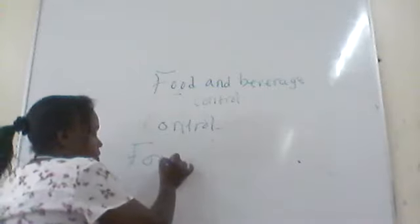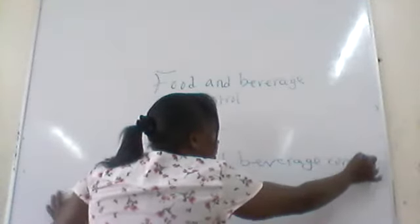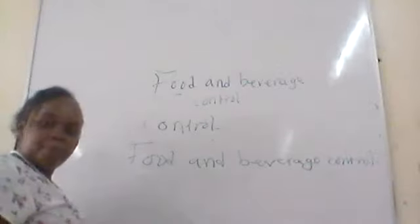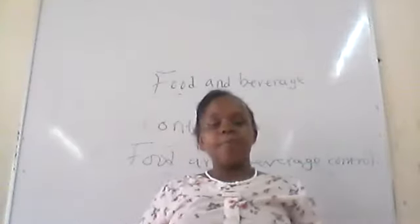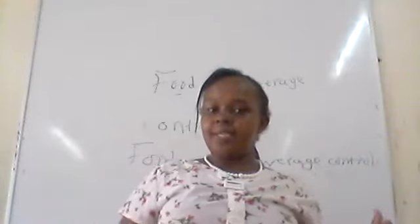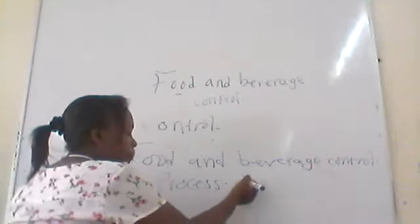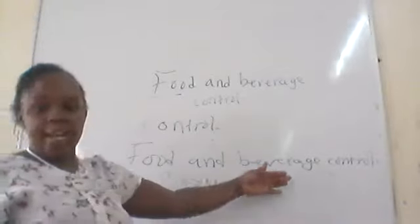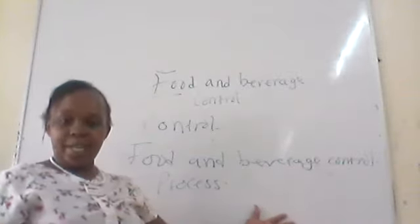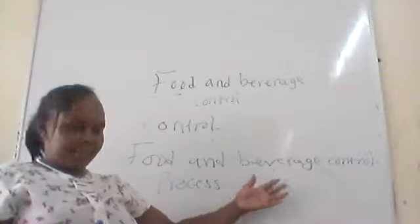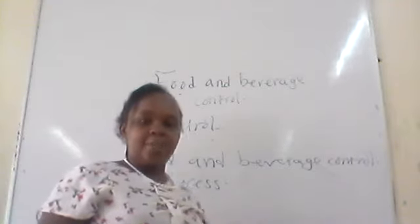We define food and beverage control. It is a process that monitors the movement of food products from the time they are purchased to the time they are consumed by the guests. It is called a process because it involves planning, requisition, writing a purchase order, purchasing, receiving, storage, issuing, preparation, production, and finally selling.